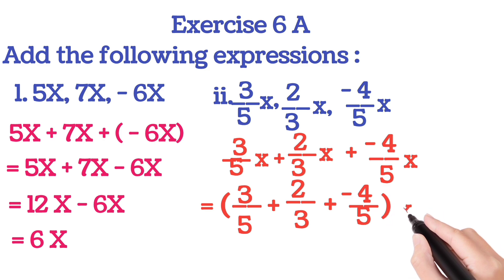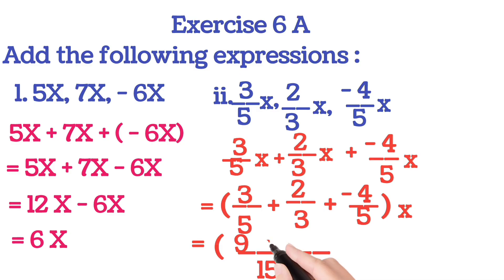Bracket close X. Now LCM of this denominator is 15. So write 15. 5 times 3 is 15, and 3 times 3 is 9. Plus, 3 times 5 is 15, and 5 times 2 is 10. So write 10. Now 5 times 3 is 15, 3 into minus 4 is minus 12. Bracket close and X.